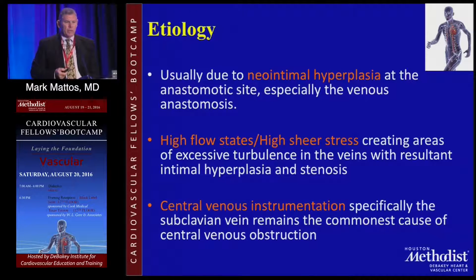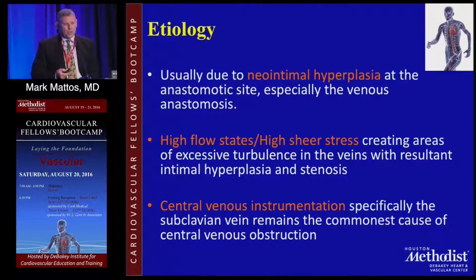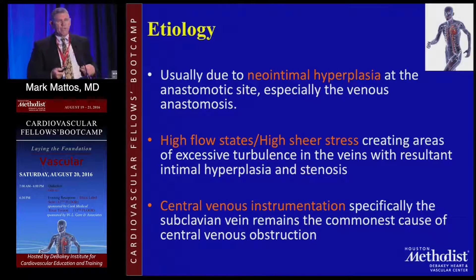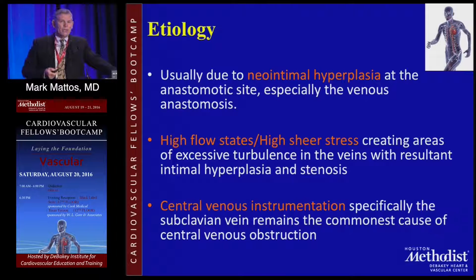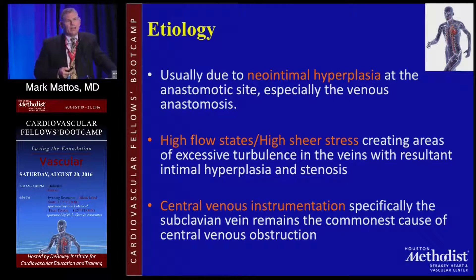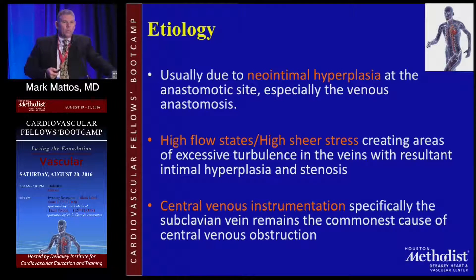Usually it's intimal hyperplasia at the anastomotic site, typically at the venous high-flow states. High shear stresses create excessive turbulence in the veins, resulting in intimal hyperplasia. The veins are not used to having high flow — they're designed for a low-flow, low-pressure system, but now they're in a high-pressure, high-flow system.